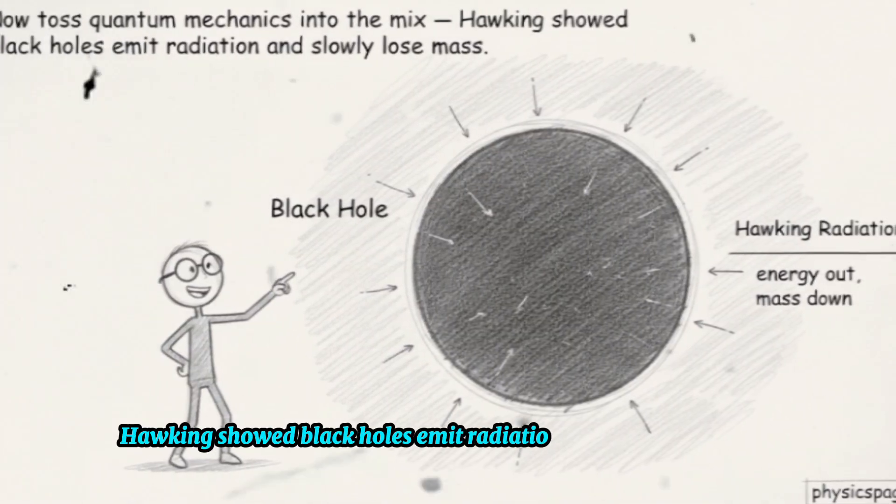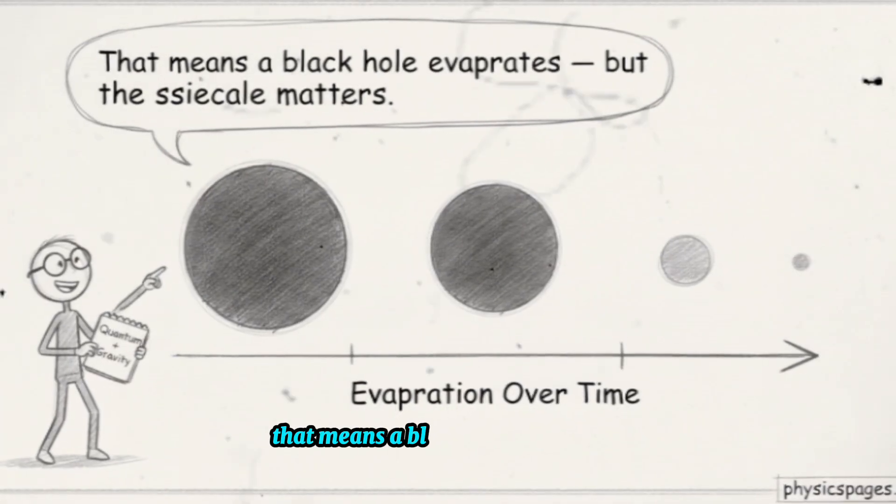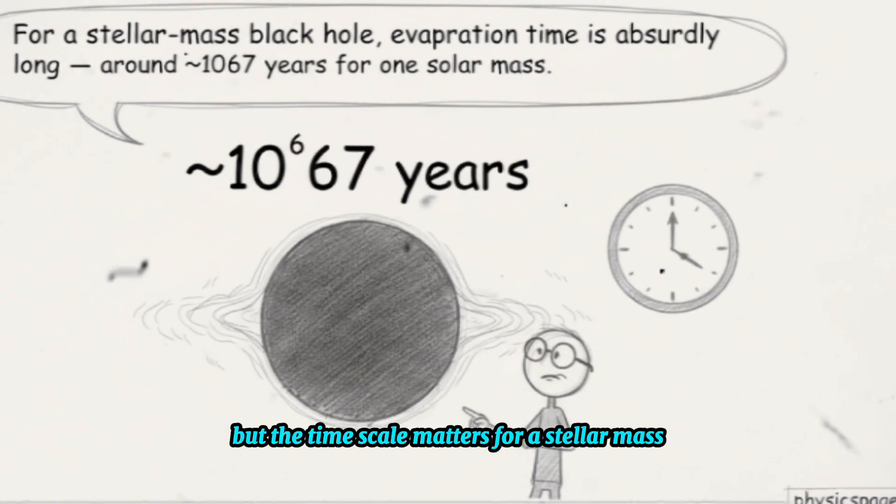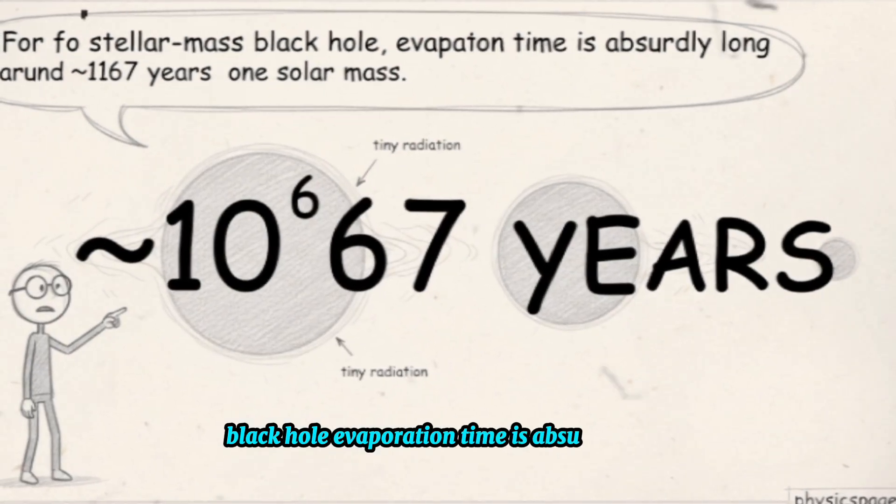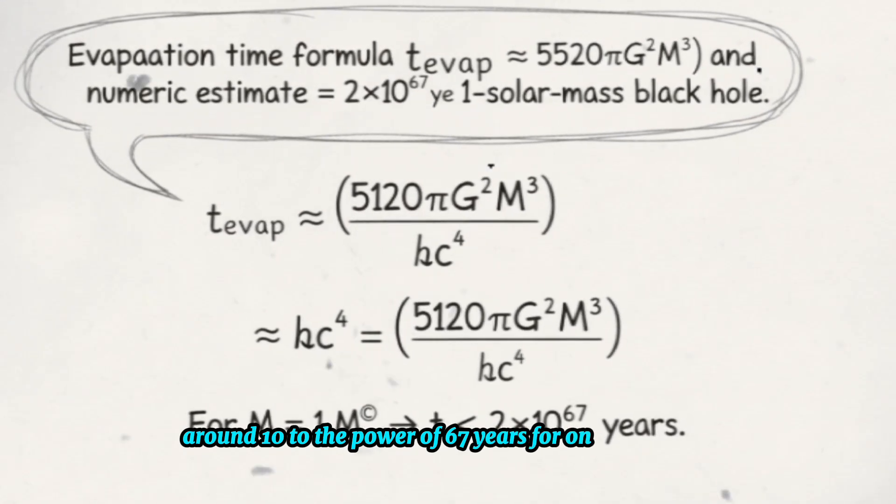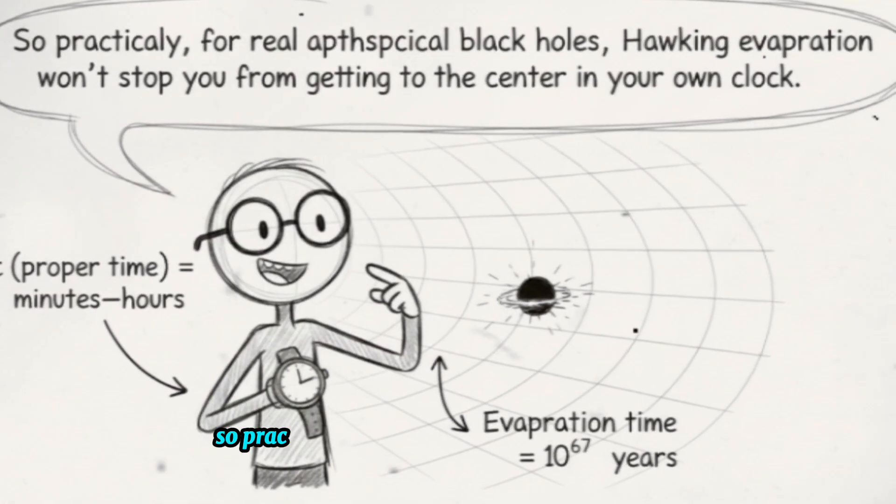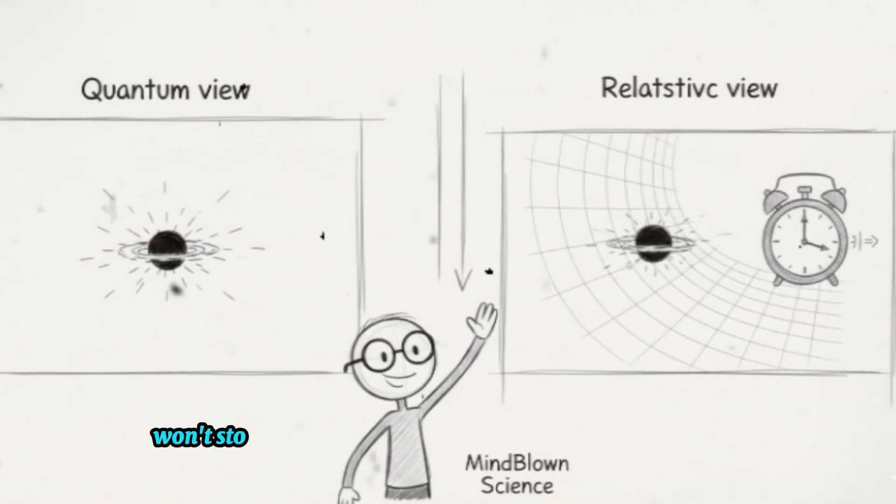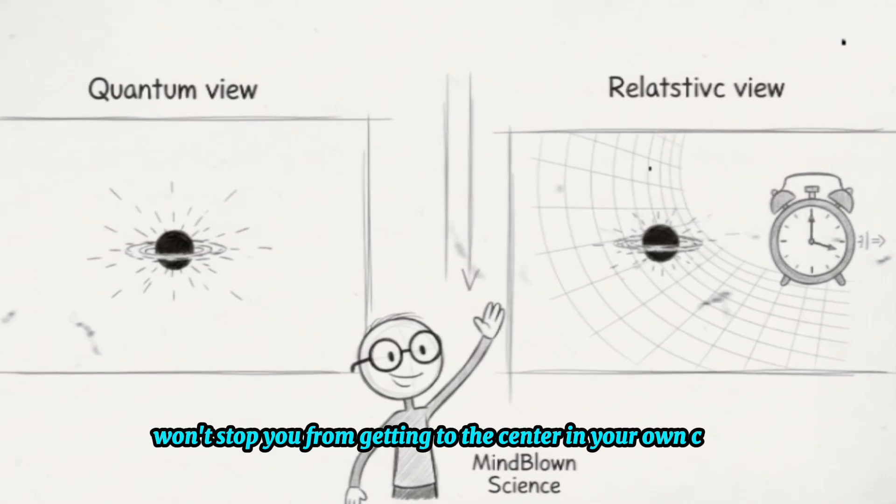Hawking showed black holes emit radiation and slowly lose mass. That means a black hole evaporates. But the timescale matters. For a stellar mass black hole, evaporation time is absurdly long, around 10 to the power of 67 years for one solar mass. So practically, for real astrophysical black holes, Hawking evaporation won't stop you from getting to the center in your own clock.